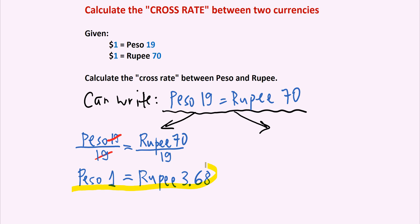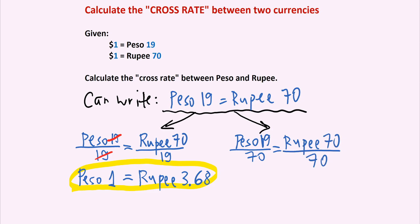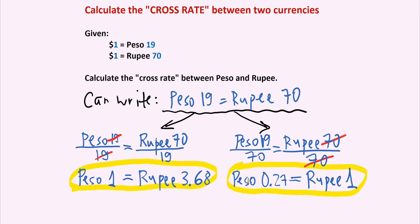This is one way to write the cross rate between the peso and the rupee. Now let's do the division by 70 on both sides. We take 19 pesos and divide that by 70, and that equals 70 rupees divided by 70. The 70s cancel out, leaving us with just 1 rupee on the right. On the left-hand side, 19 divided by 70 gives us 0.27 pesos, so 0.27 pesos equals 1 rupee. This is the second way to write the cross rate between the peso and the rupee.